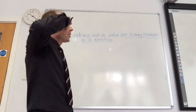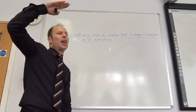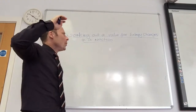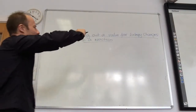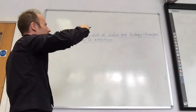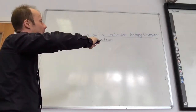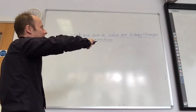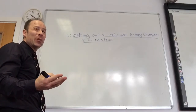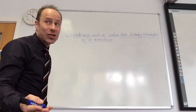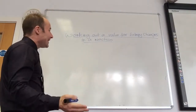Last time we looked at whether the entropy of the reaction gets higher or lower. We now need to actually put a value on it — a number to say whether the entropy is getting higher or lower. It works in a very similar way to when we looked at enthalpy changes in a reaction. So it's dead easy to do.